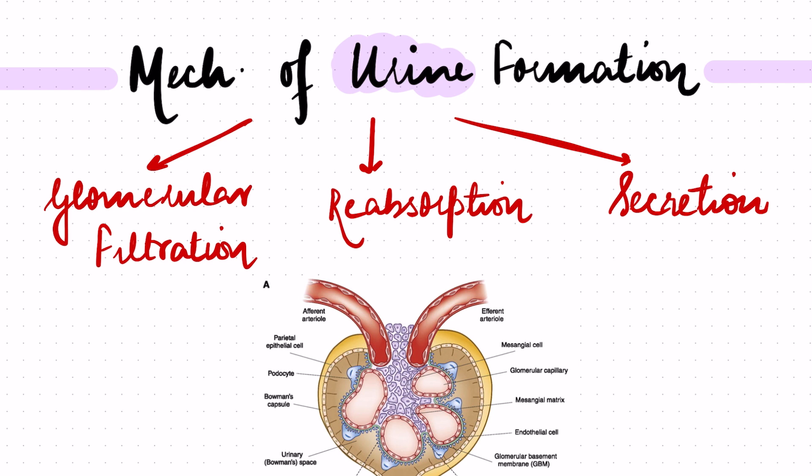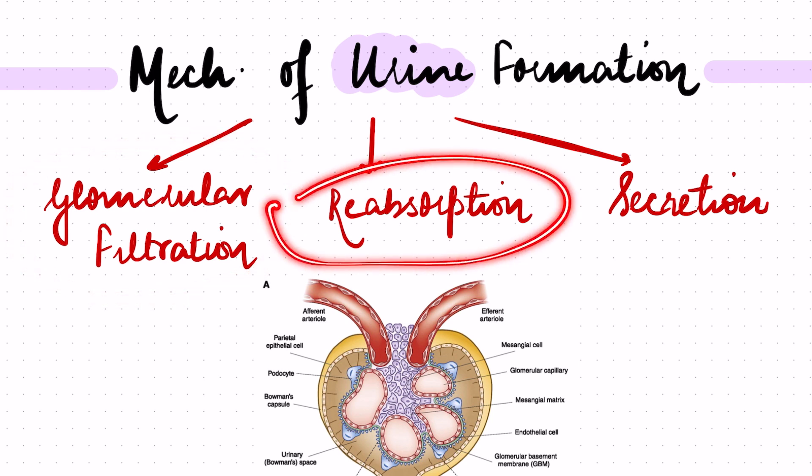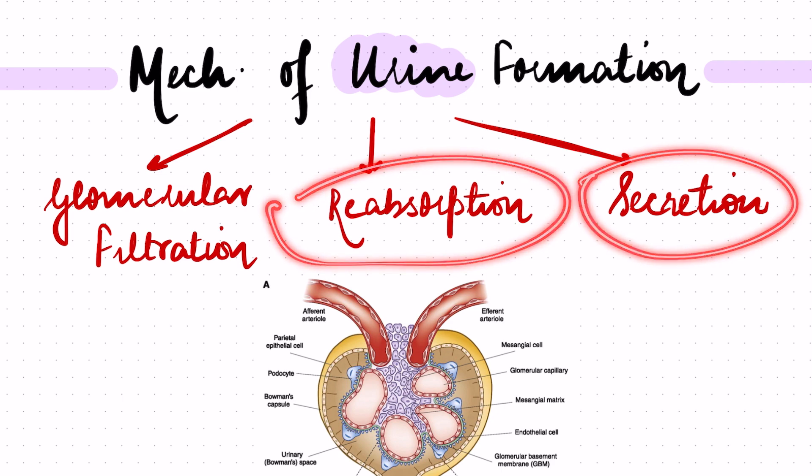Our today's video will be based on mechanism of urine formation. It will be an exclusive video on the mechanism of urine formation and not the concentration of it. The basic mechanism of urine formation involves three steps: the first one is glomerular filtration, the second one is reabsorption, and the third is secretion.